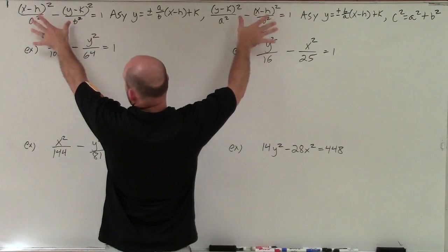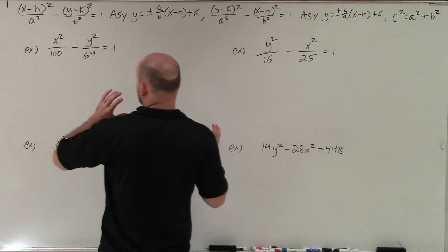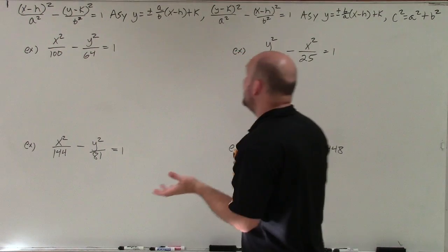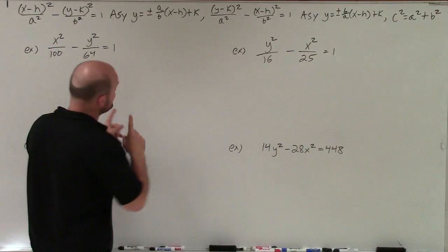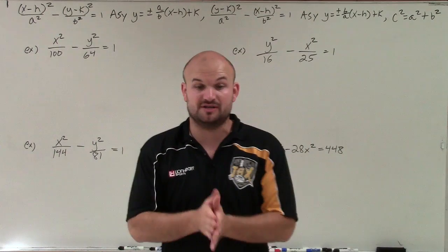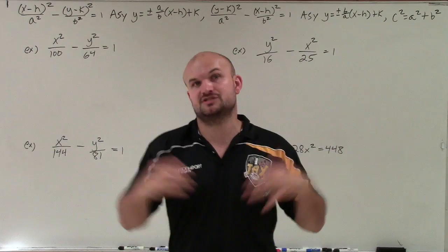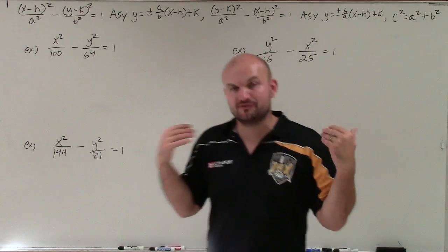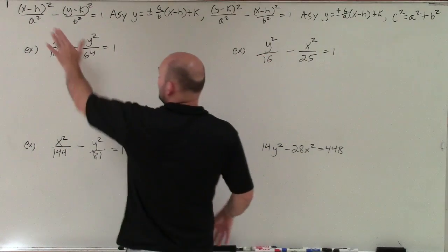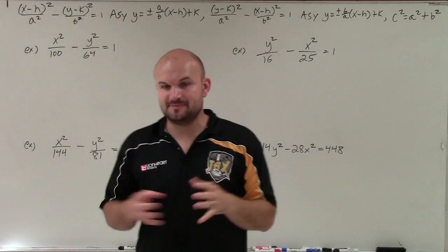Here are our two equations for hyperbolas. They look very similar to an ellipse. The key differences are that between the x and y terms we're always subtracting. Also, previously for an ellipse, a was always larger than b, because a represented the distance from the center to your vertices, and b represented the distance from the center to your co-vertices. We need to forget about that when dealing with hyperbolas, because that's not always the case. For a hyperbola, it's always a squared minus b squared.